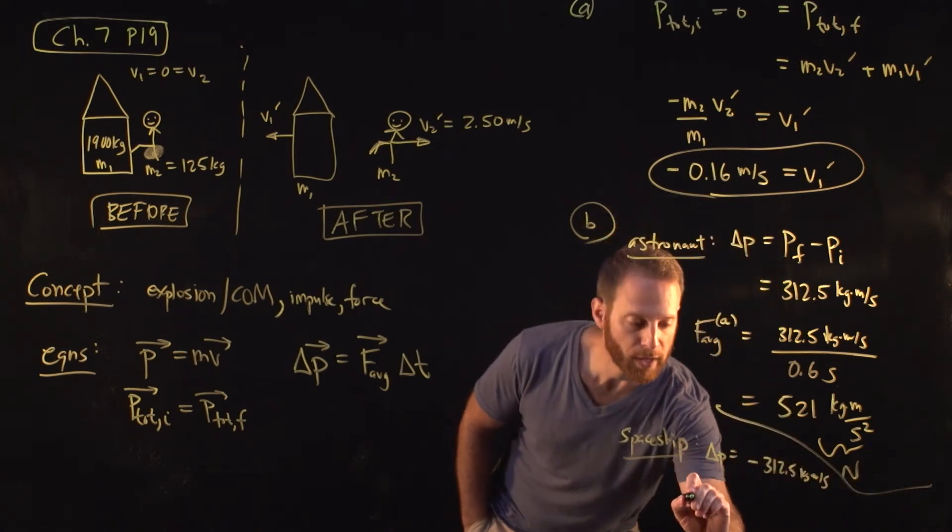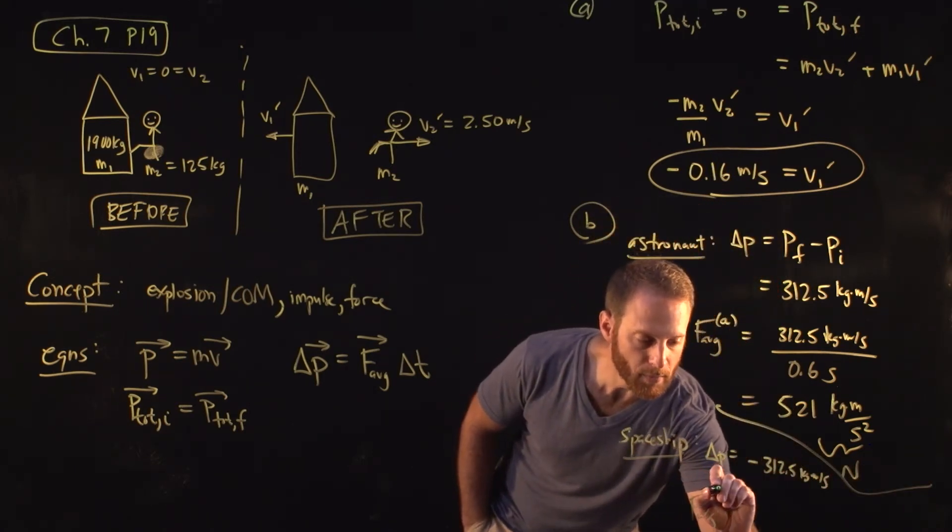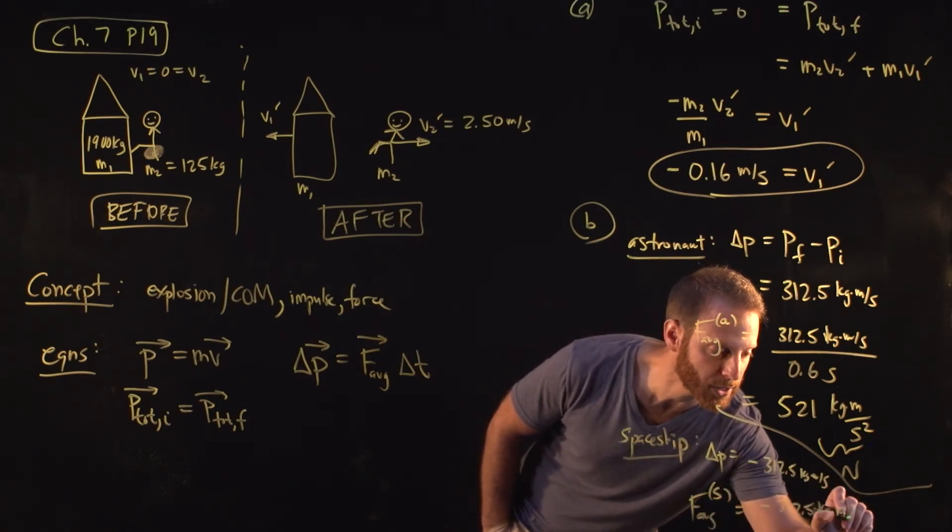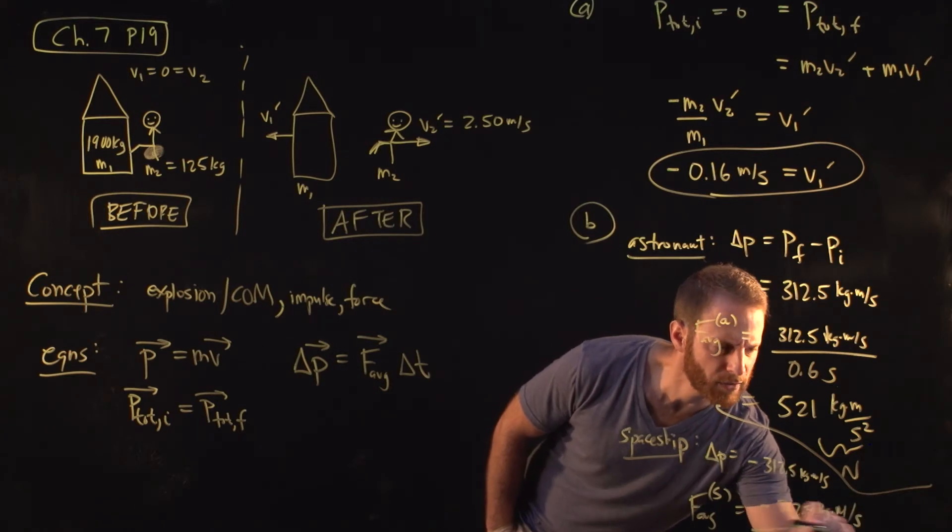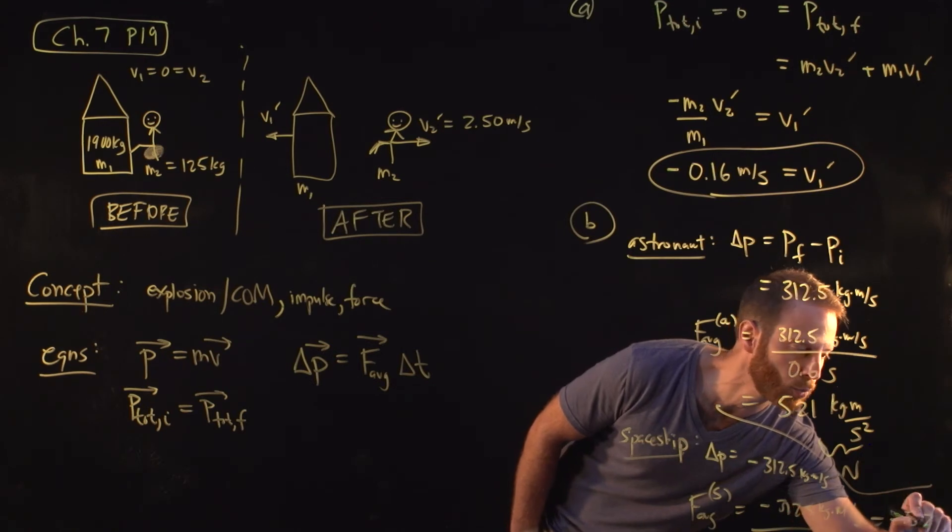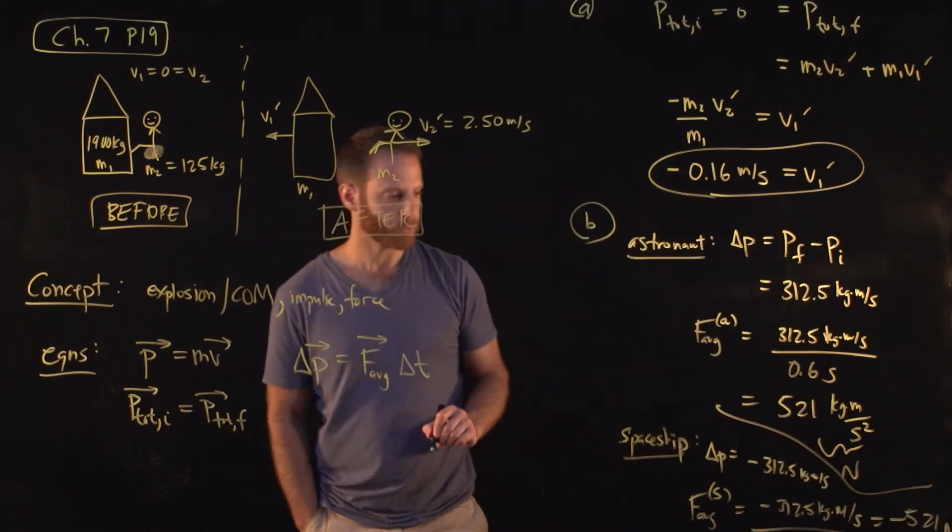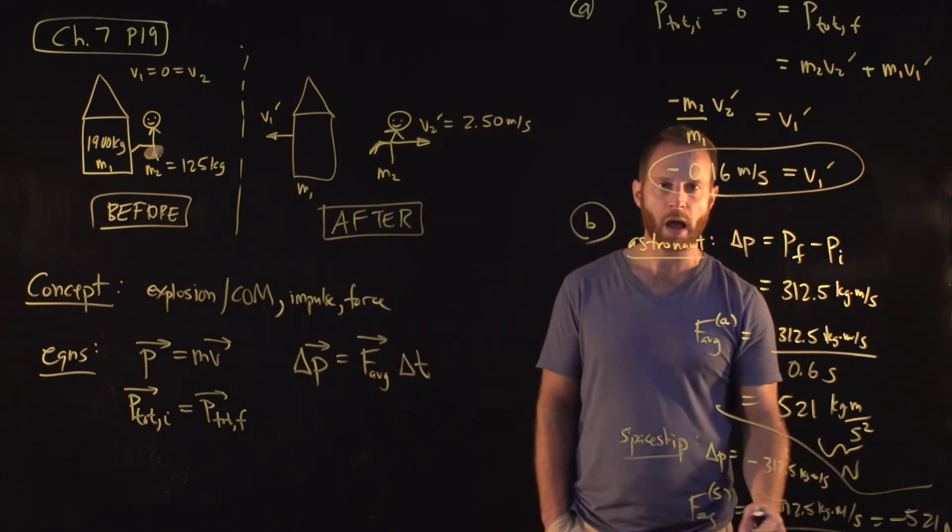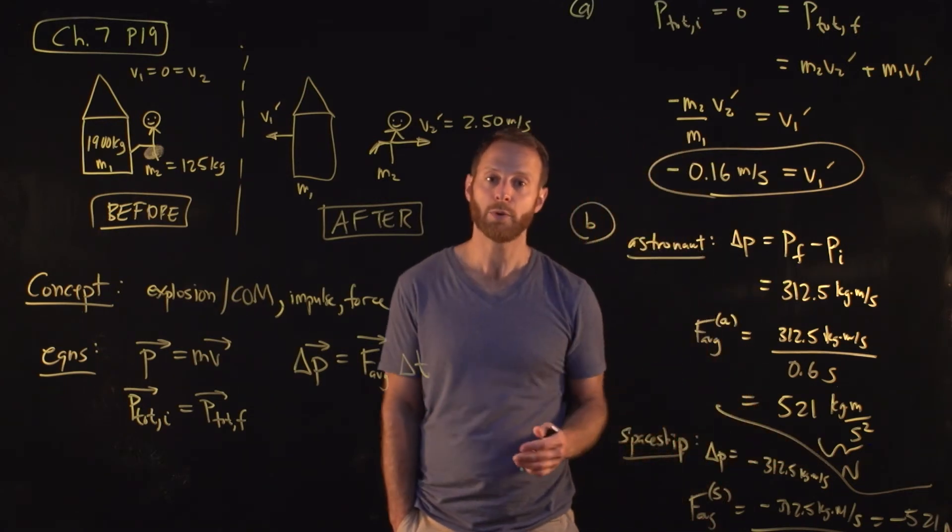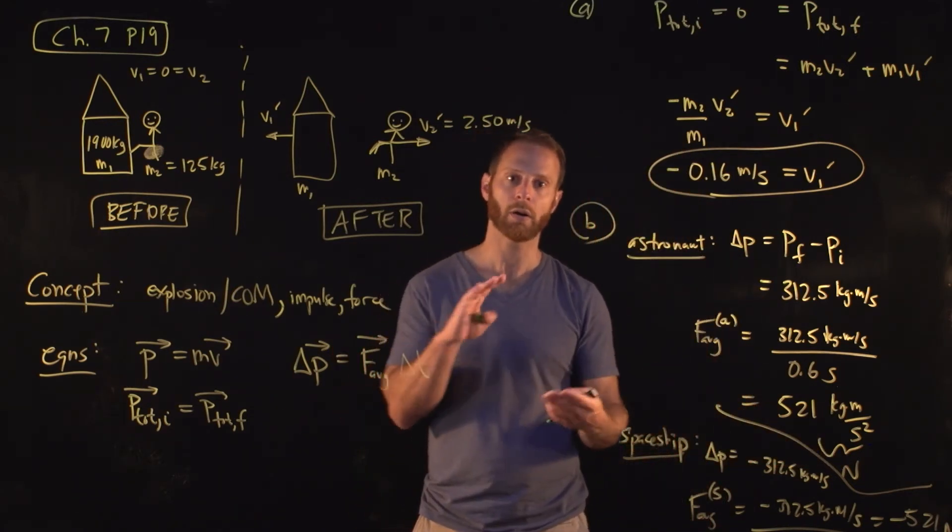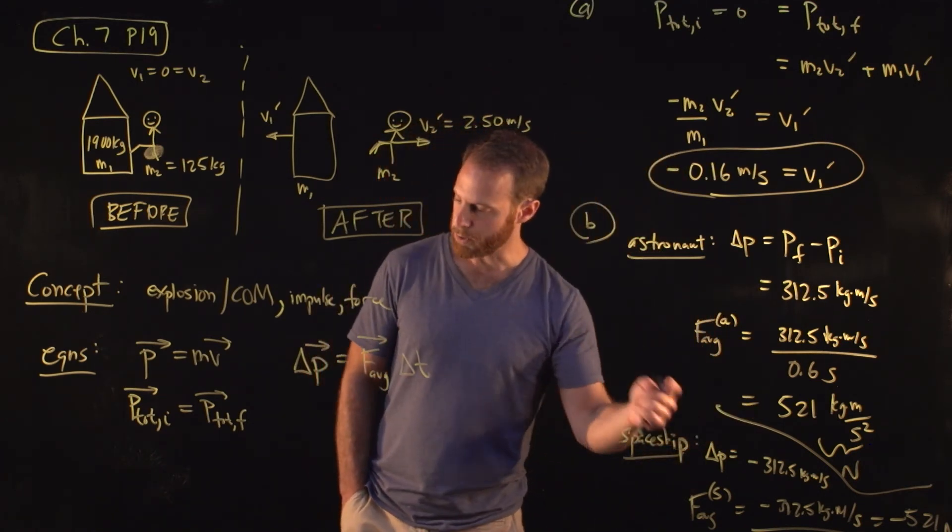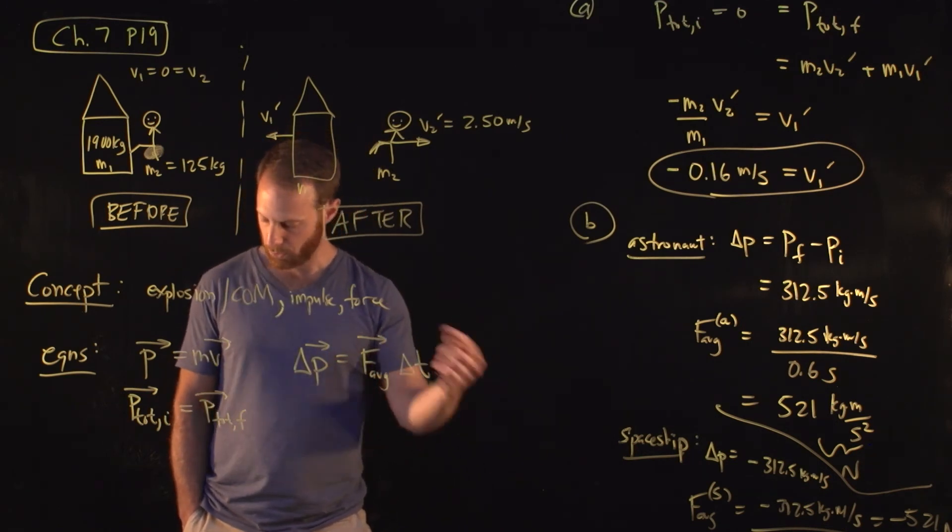So I'm going to keep these separated. Therefore, the average force on the spaceship is minus 312.5 kilograms times meters per second, divided by the time. You probably see this is going to turn out to be the same number, minus 521 or so newtons. The fact that these things are equal in magnitude but opposite in direction is actually just a restatement of Newton's third law. So conservation of momentum and Newton's third law are, if you like, two sides of the same coin. So that just tells you that the force of object one on object two is equal and opposite to the force of object two on object one.